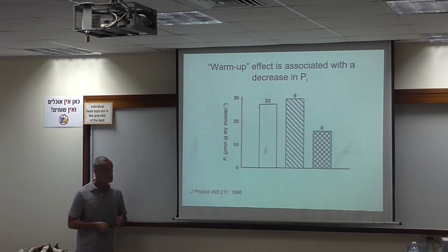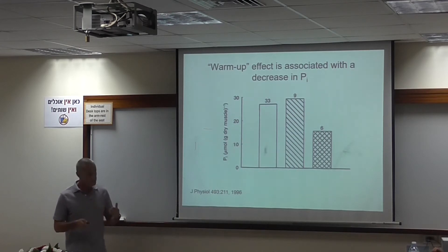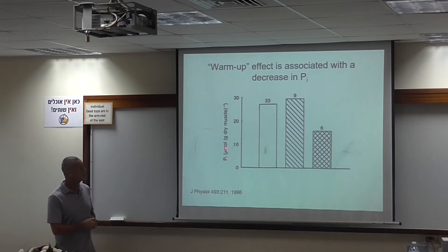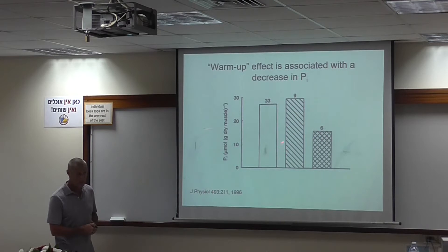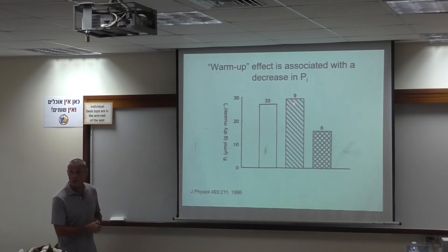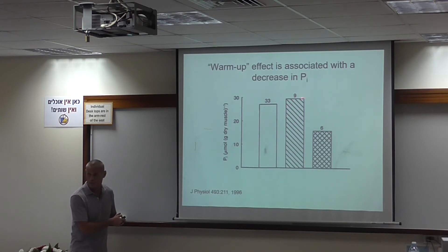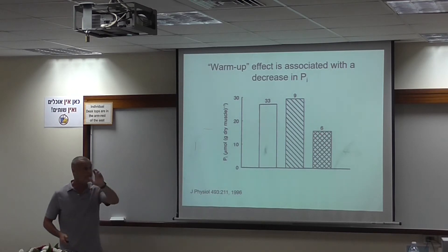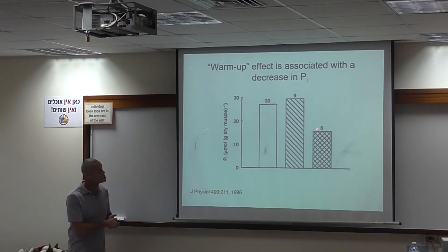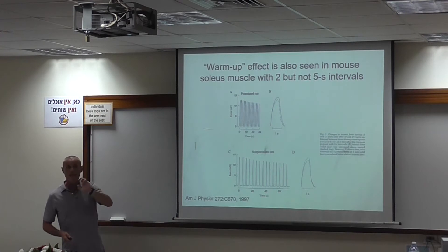On single fibers we don't have enough material for analytical biochemistry, so we used pooled fibers. Here we have phosphate content in micromoles per gram dry muscle. We have 33 pooled fibers frozen in the basal state at rest, with about 25 micromoles per gram dry weight. Fibers stimulated 10 times and allowed to recover for 60 minutes showed no potentiation of force, and at that time no change in phosphate. However, fibers stimulated 10 times and allowed to recover for 5 minutes — at the time of maximum potentiation — showed close to a 50% decrease in phosphate. Similar findings were observed in the intact mouse soleus muscle.